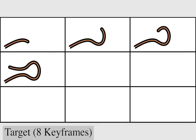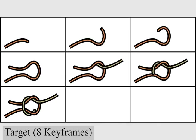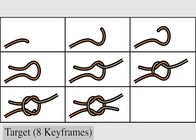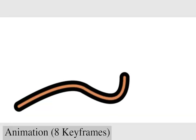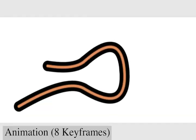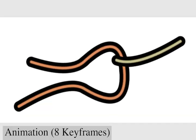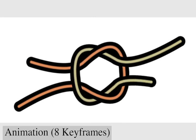Here are 8 target keyframes for a knot involving two ropes. Again, the ropes extend and bend to pass through the target keyframes, illustrating tying this particular knot.